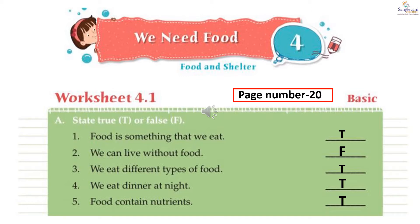The third one is: we eat different types of food. Yes, it is true. We eat different types of foods like roti, chapatis, idlis, dosas, pizzas and more — so write T. The fourth one is: we eat dinner at night. There are three main meals in a day — breakfast in the morning, lunch in the afternoon, and dinner at night. So write letter T — true.